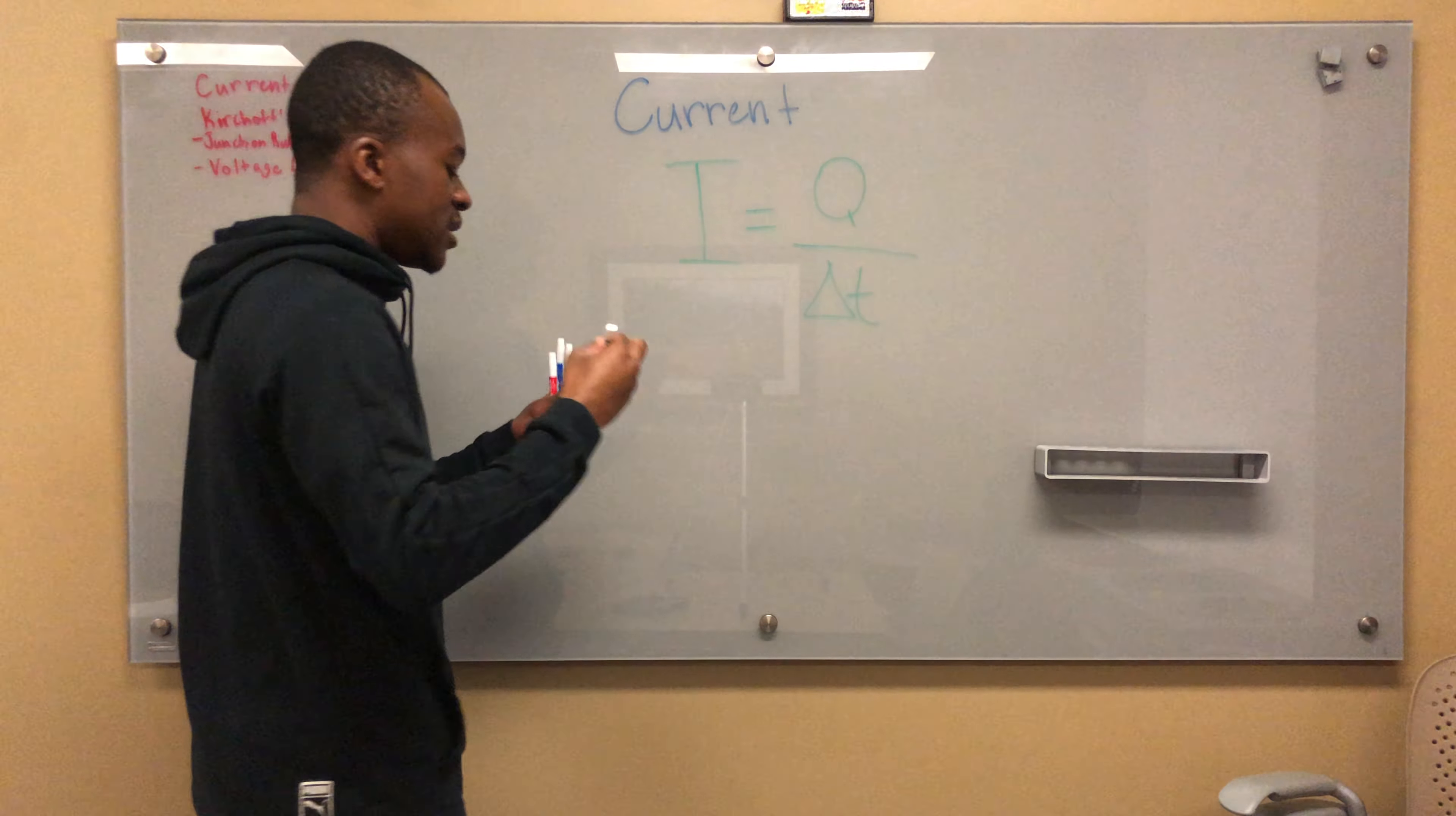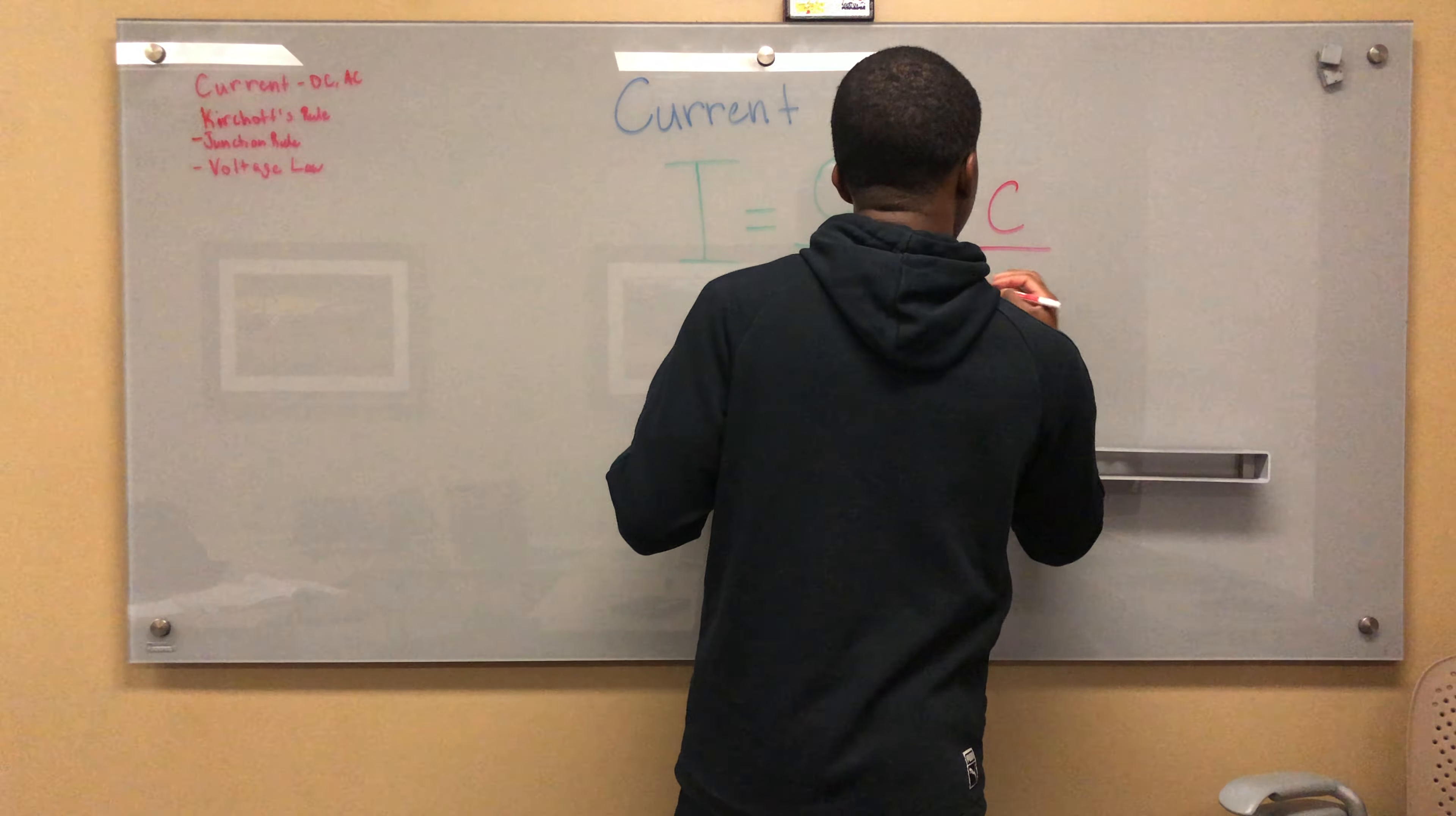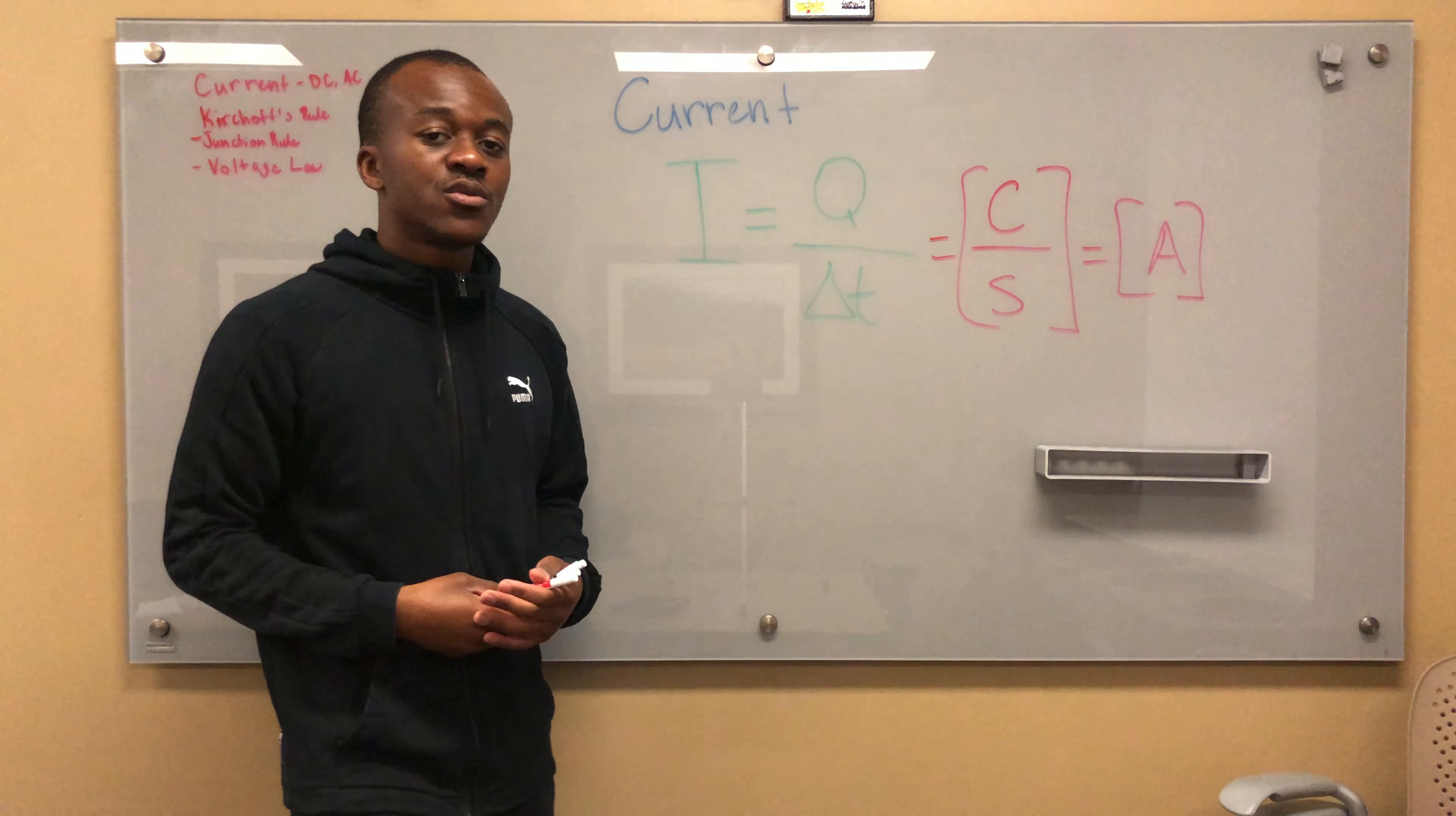Basically, this says that the amount of current flowing through something is equal to the charge flowing through it per second. So, the units are coulombs per second, but we call these amps. An amp is equal to a coulomb per second. So if I have five amps going through something, that's five coulombs per second going through that circuit or component.